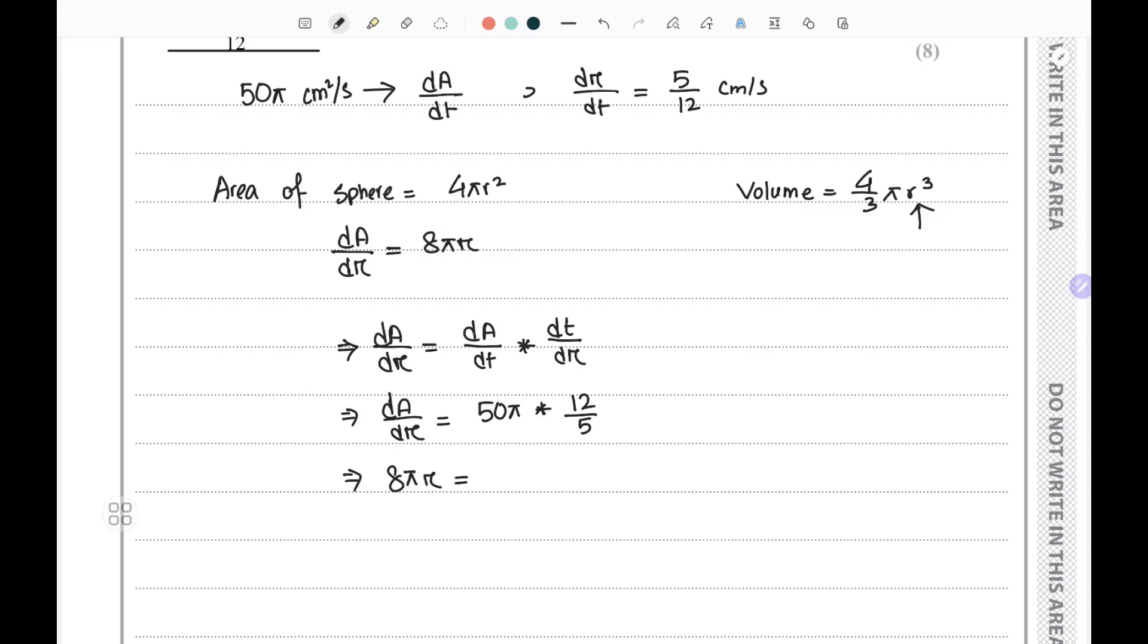I'm not going to cancel π, so 12 times 50 is 600. So 8πr equals 600π divided by 5, and the radius value from here is 600π divided by 40π.